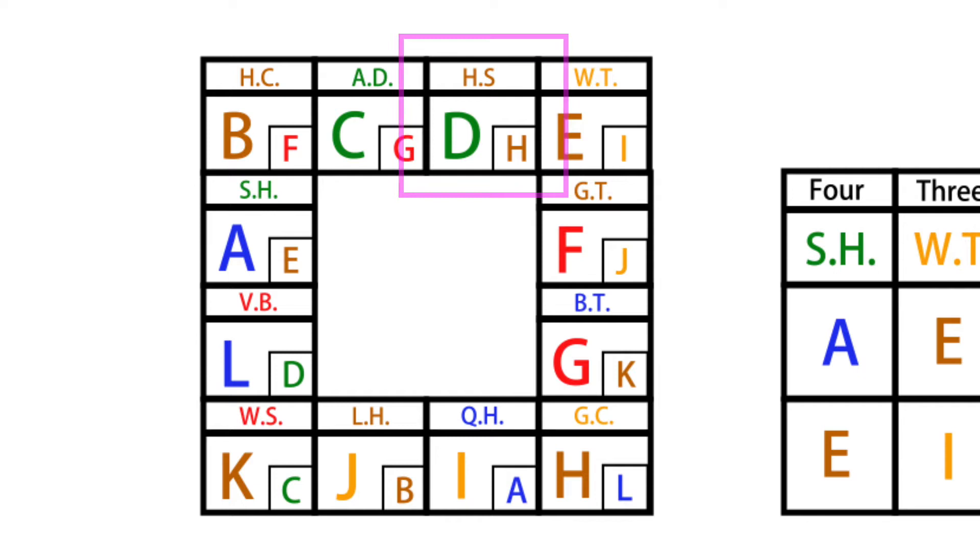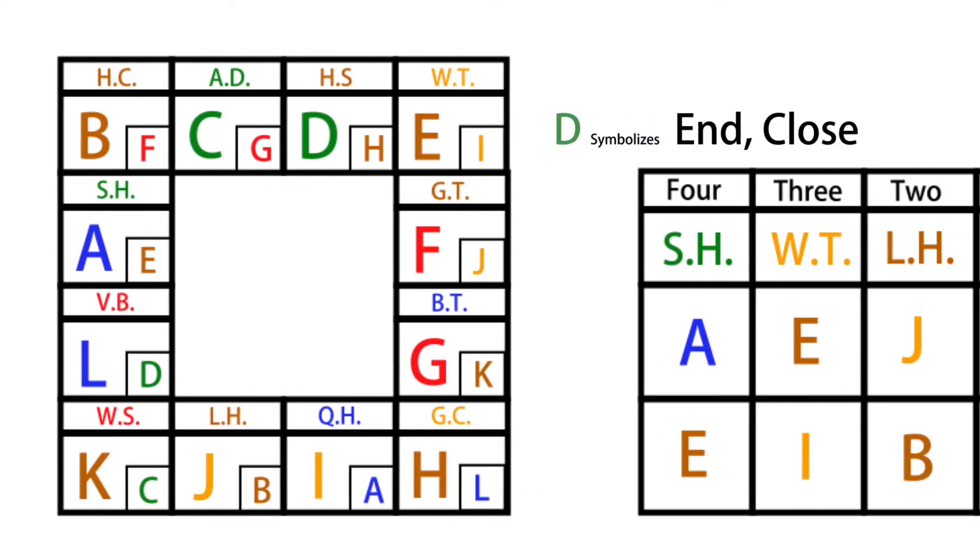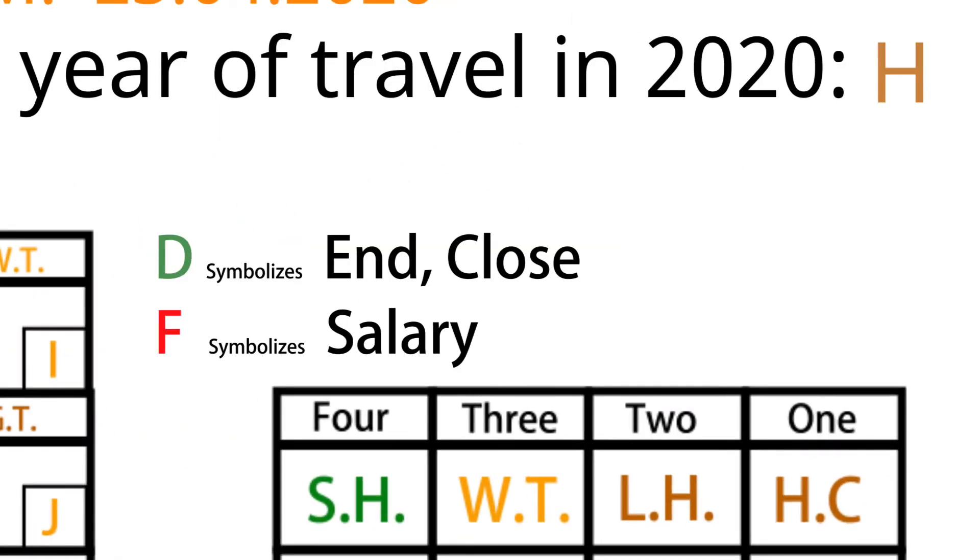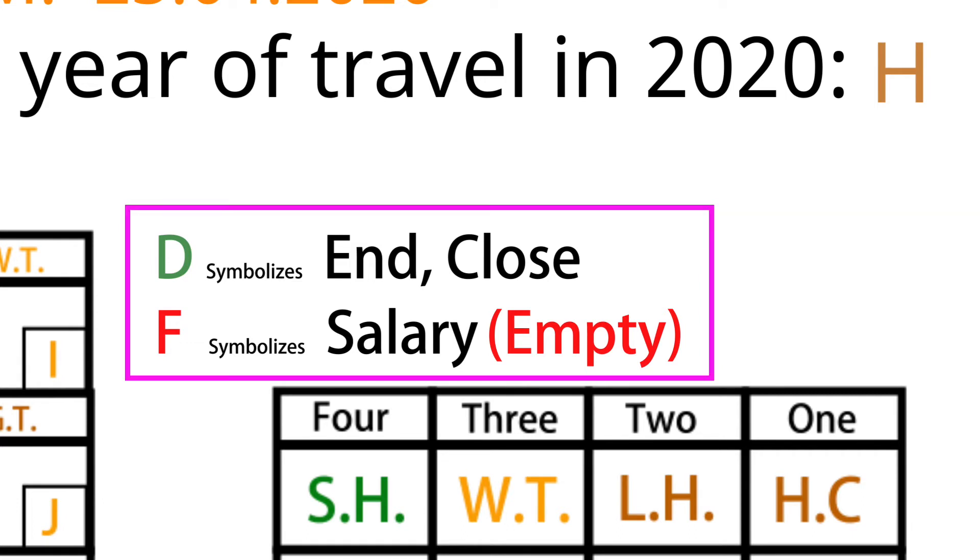Above H is D. On the day of asking the question, D stands for end and close. Then we look at IF. IF represents her salary on April 23, 2020. IF's status on that day was empty. You can understand that the current company no longer pays her. Judging from the status of the two symbols of end and no pay, we can easily conclude that she will leave the company eventually this year no matter what.